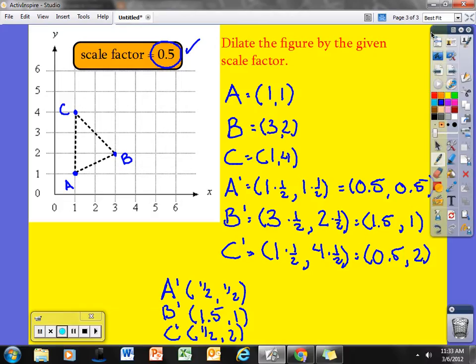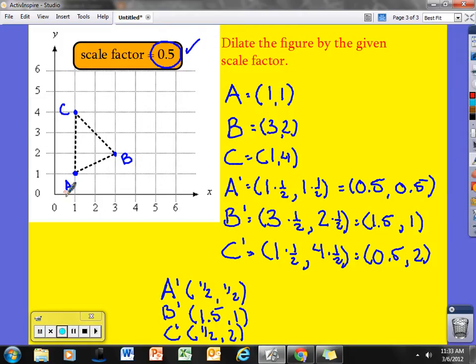I can then go plot these points. A is half, half. Half, half. That would be actually right here. We'll call that A prime.